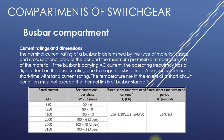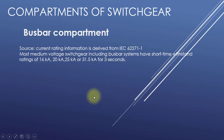Here you can see two bars of 100 by 6 mm are used — this is the size of one bar, and two bars are used together to increase the current capacity. This is a two-bar arrangement. Additionally, with a depth of 10 mm, three bars can be used, further increasing the current rating. This is the detail about the bus bar compartment.